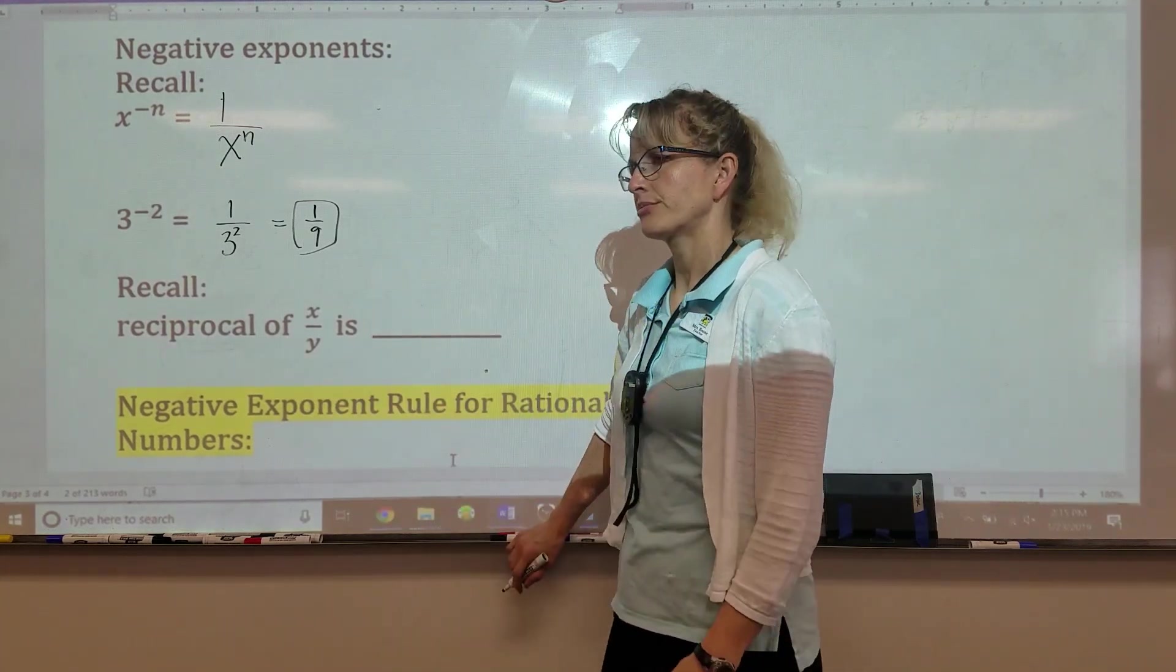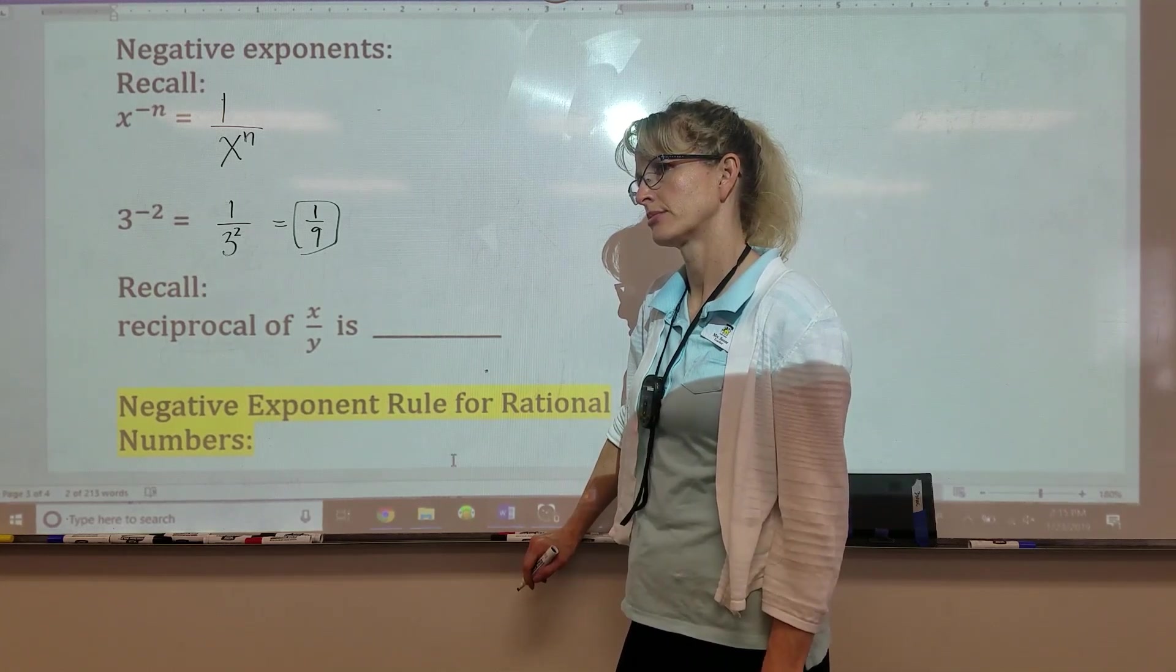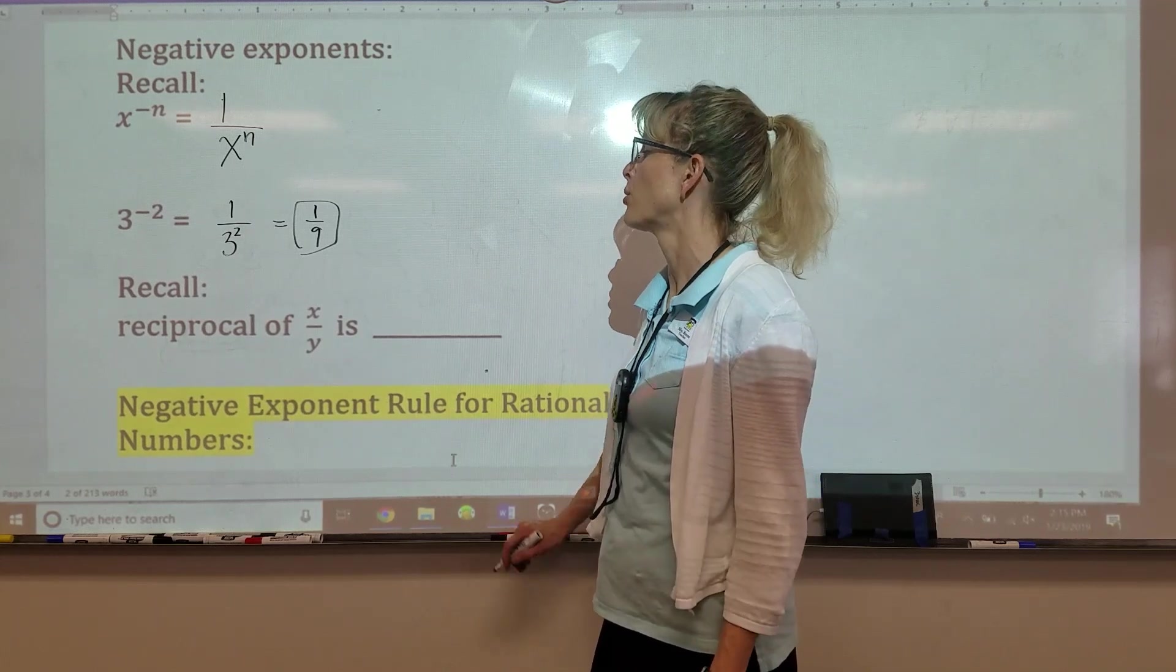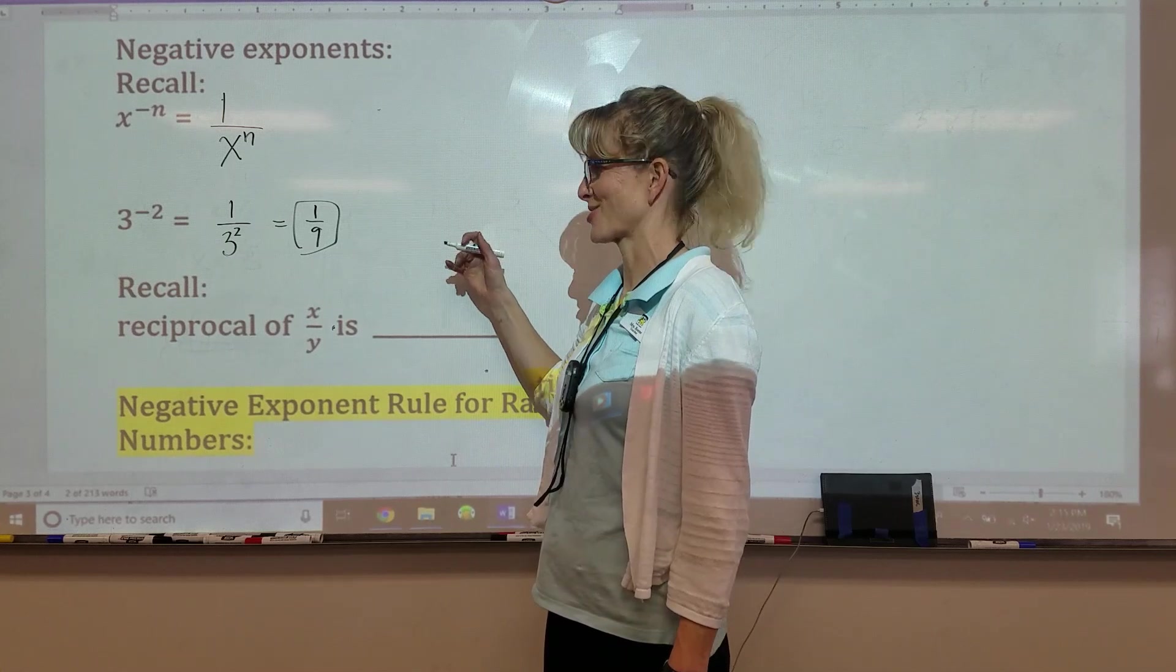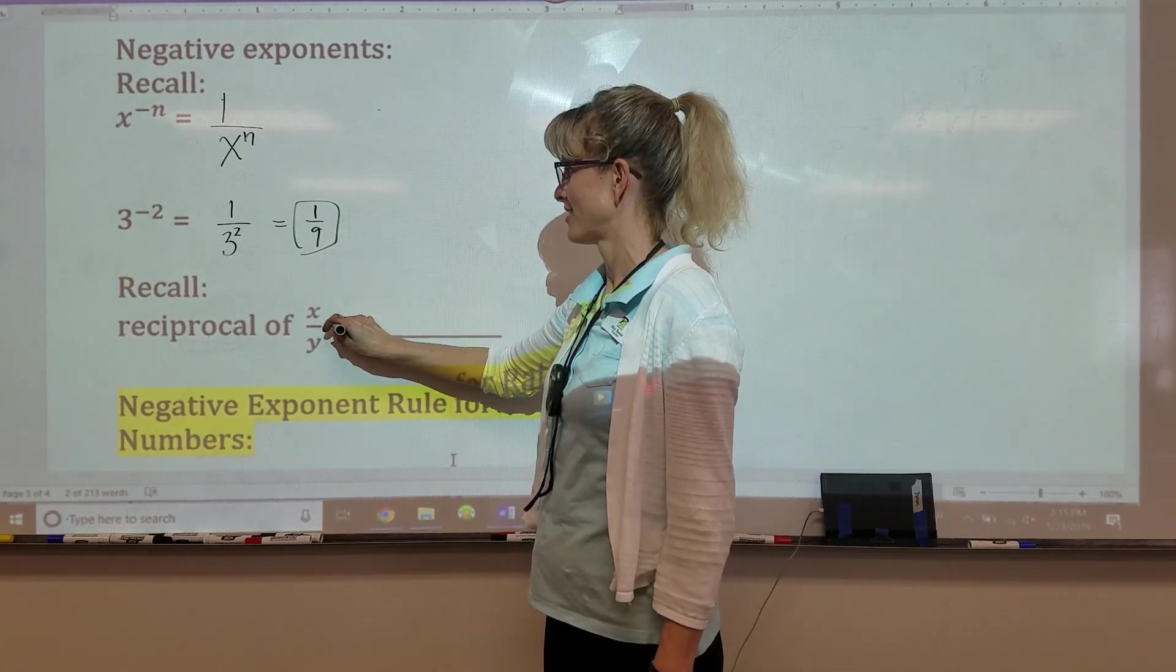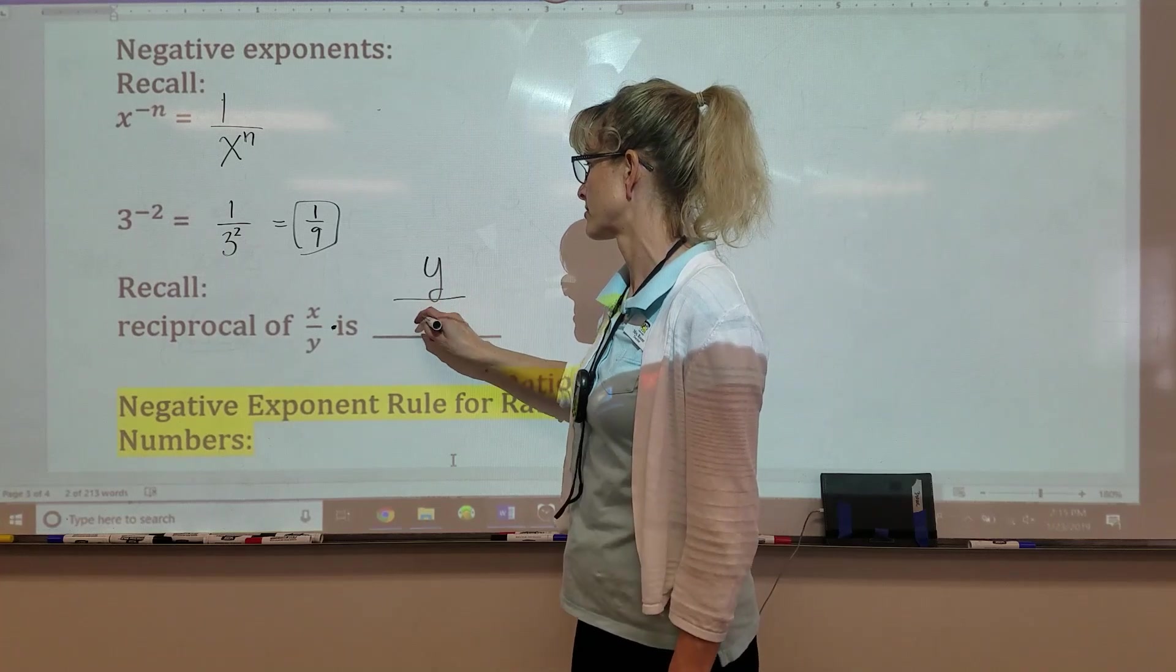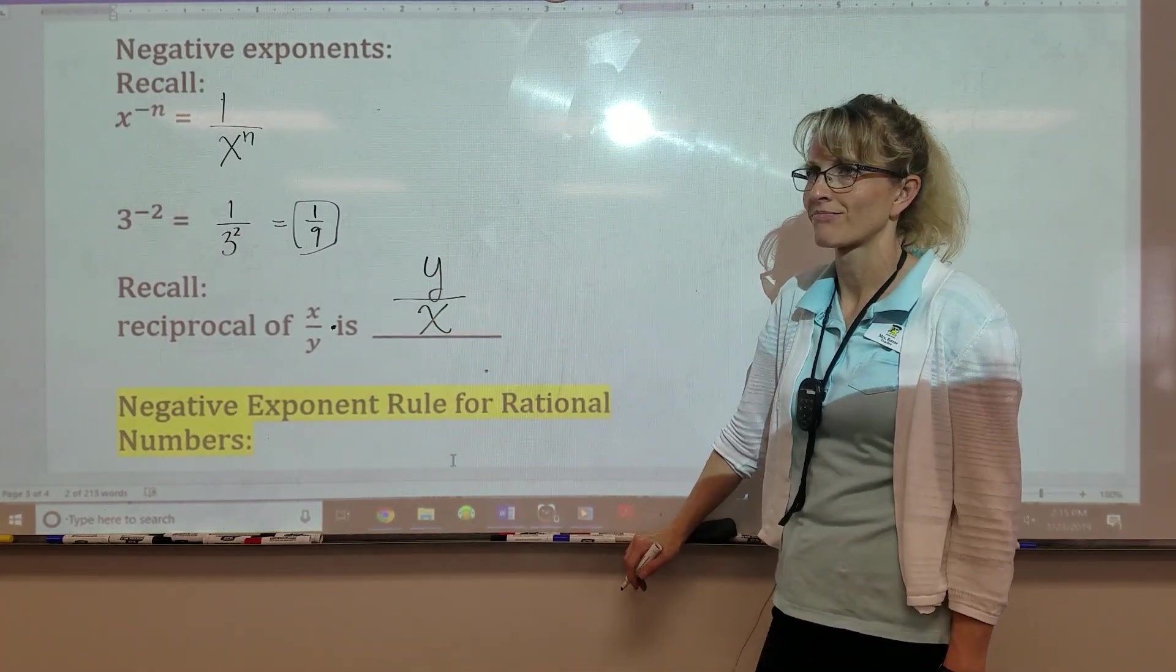The reciprocal is when you can, it's basically like with that x over y, you would find the way to make that equal 1. You would find the way to make it equal 1. So what would you times it by to make it equal 1? I like your description. The way I do it is I flip it over,